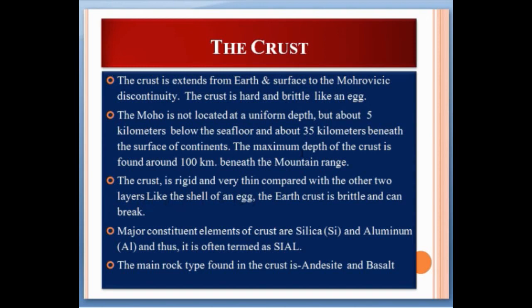The Earth's crust is brittle and can break. The major constituents of the crust are silica and aluminum, and thus it is often termed SIAL — where SI is taken from silica and AL is taken from aluminum. The main rock types found in the crust are andesite and basalt.